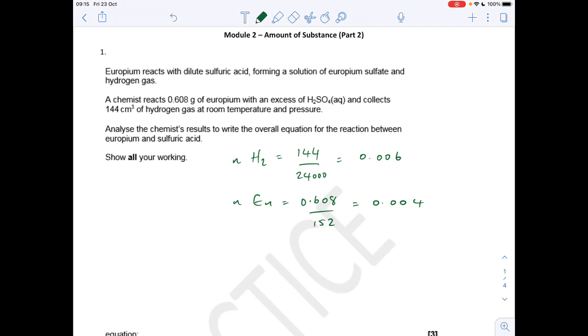If we divide both of those by the smallest, we can see that these are reacting in a two to three ratio. So we can construct a partial equation: two moles of europium reacting with H2SO4 to make three moles of hydrogen and europium sulfate. From the equation, the number of hydrogens on the right is six, so we need a three in front of that. Therefore, the europium sulfate must have this formula: Eu2(SO4)3.